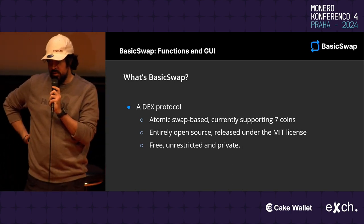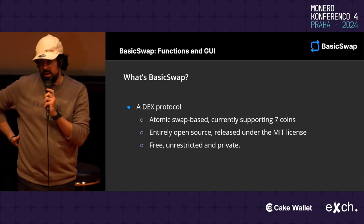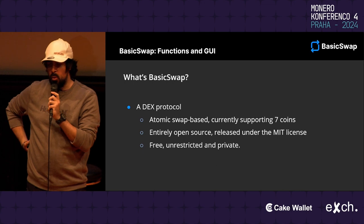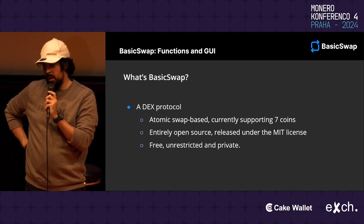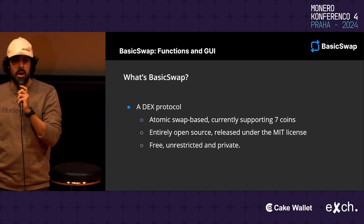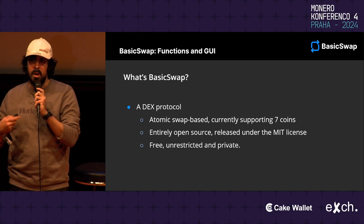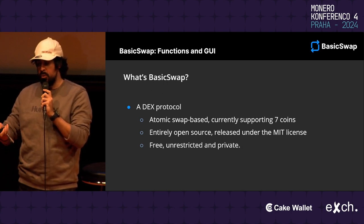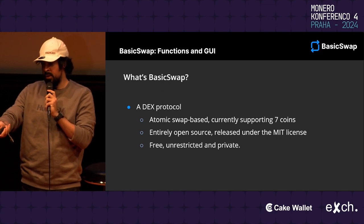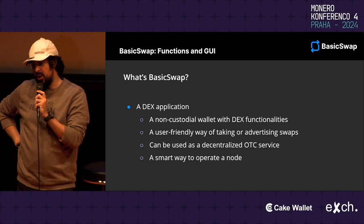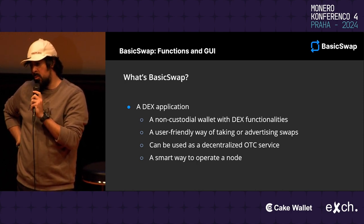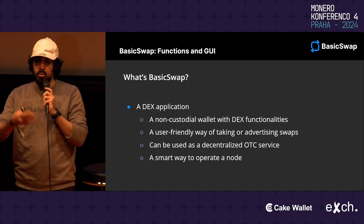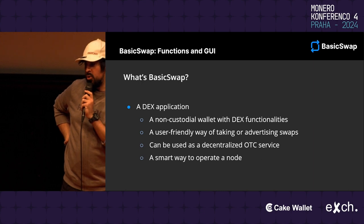To understand BasicSwap, it's useful to separate it into two ideas. First, it's a protocol — an open source protocol, not monetized — currently supporting seven coins with two more coming up. The ideas behind the atomic swaps are very much about decentralization and privacy. But it's also an application, which is what most people here might be familiar with if you played with it or came to the workshop yesterday.